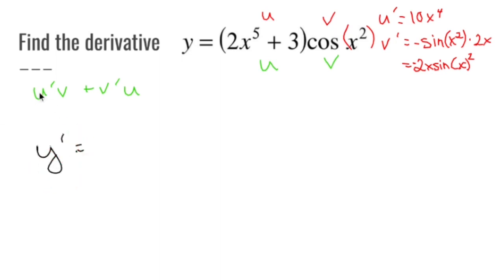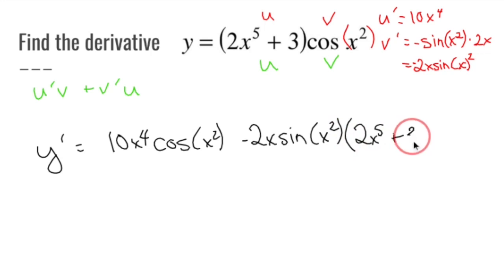Y prime is u prime, which I called 10x to the 4th, v, which is cos x squared, plus v prime, which was negative. So let's put that plus into a negative, minus 2x sine x squared times u, which was 2x to the 5th plus 3.